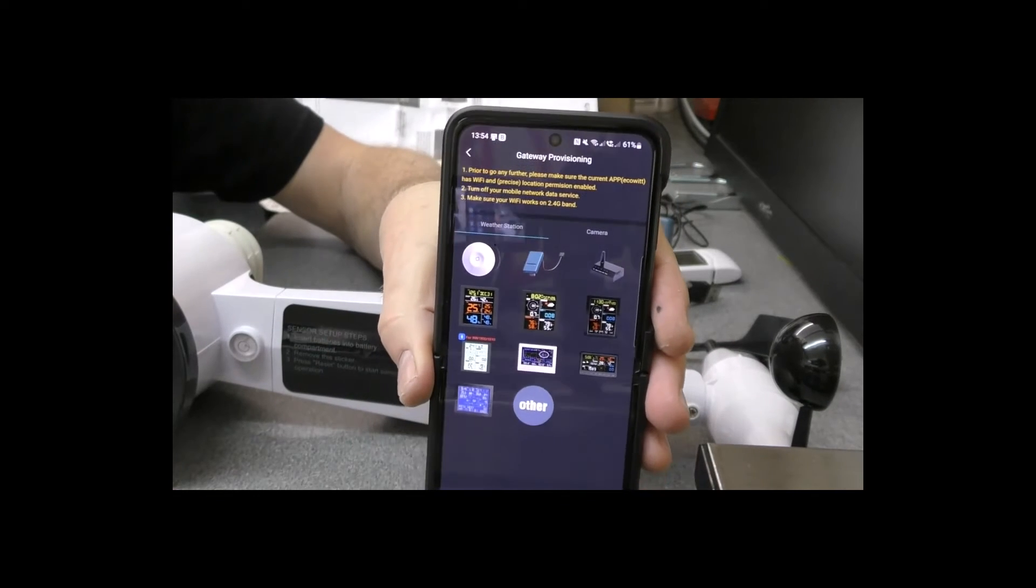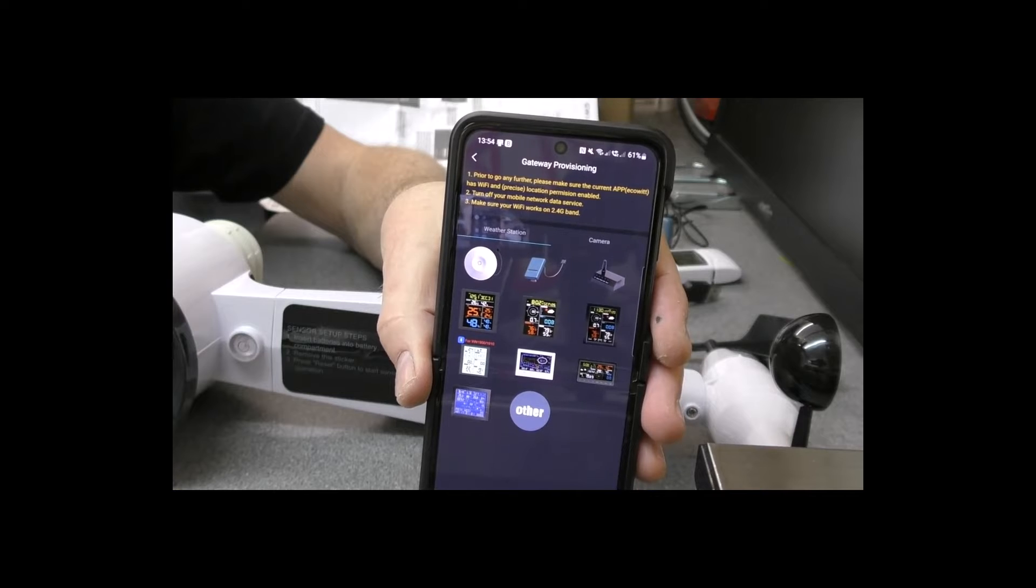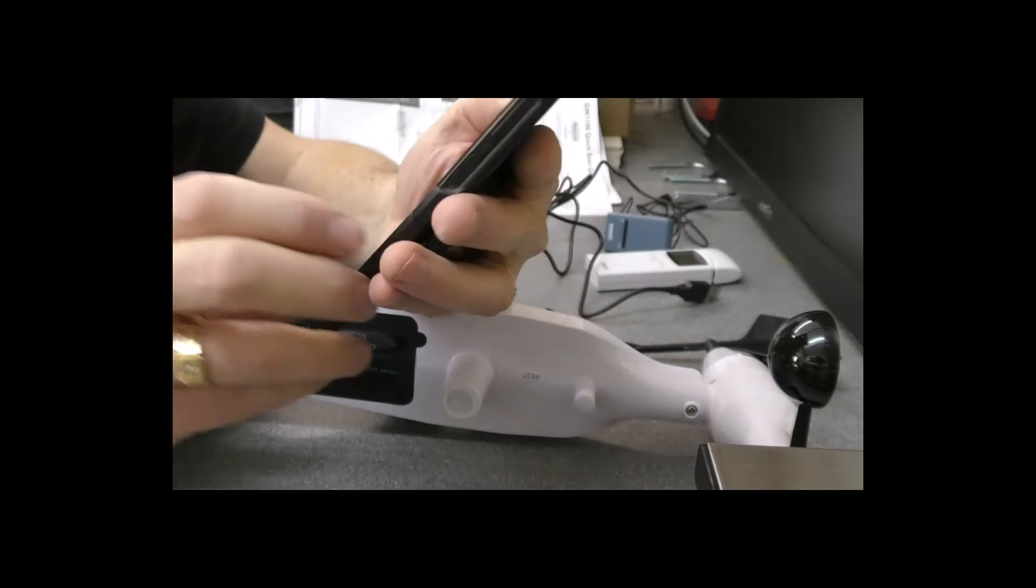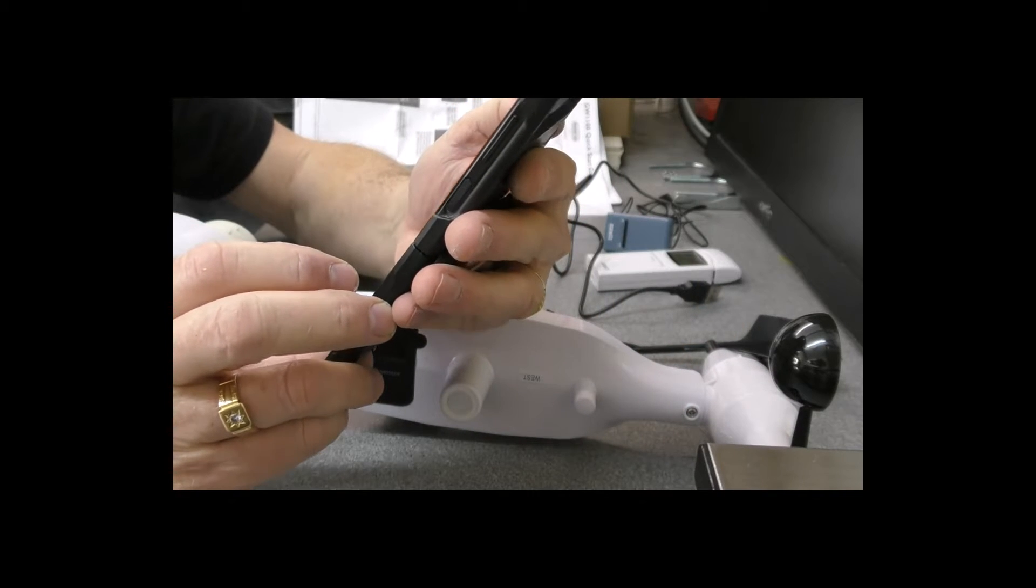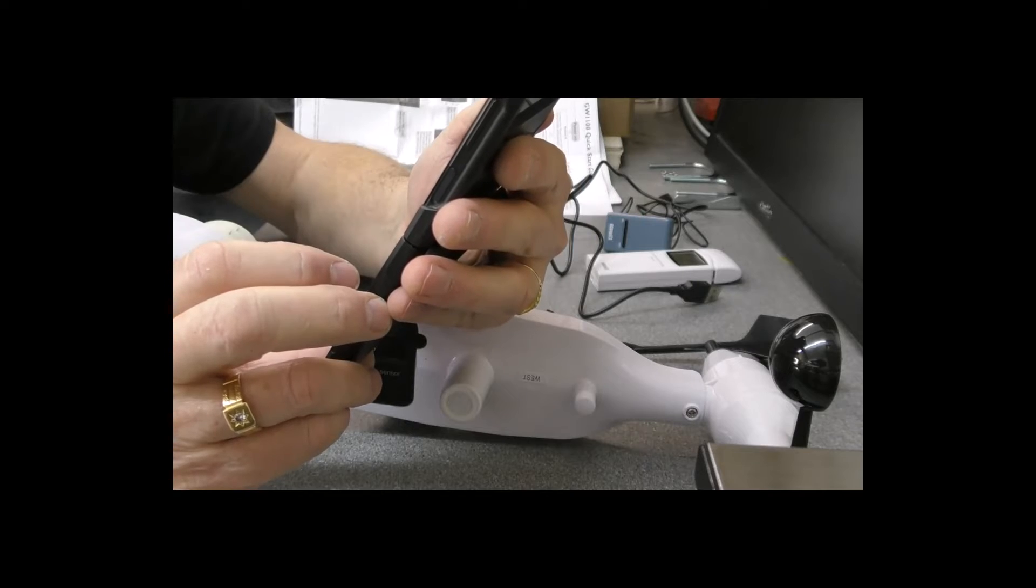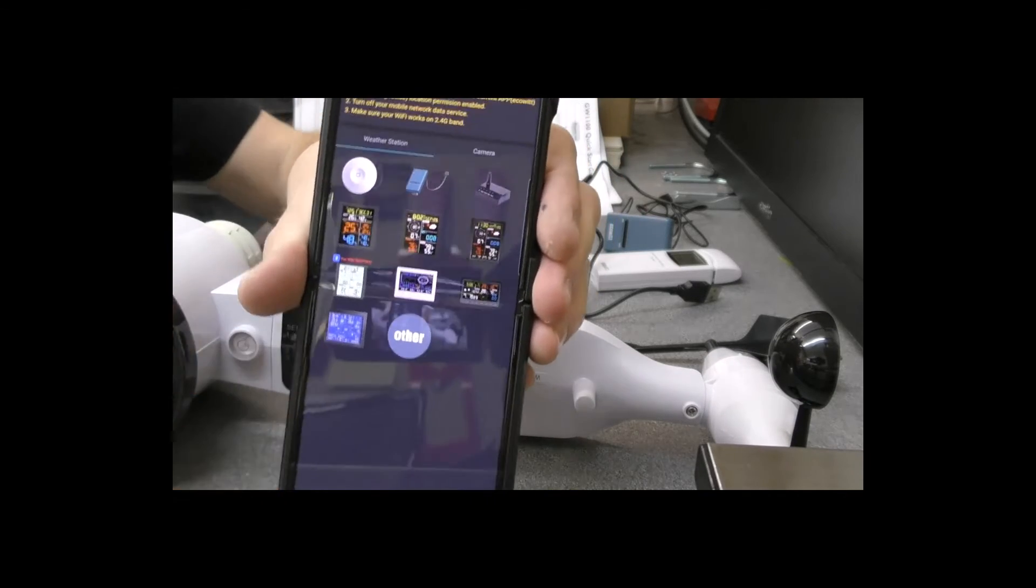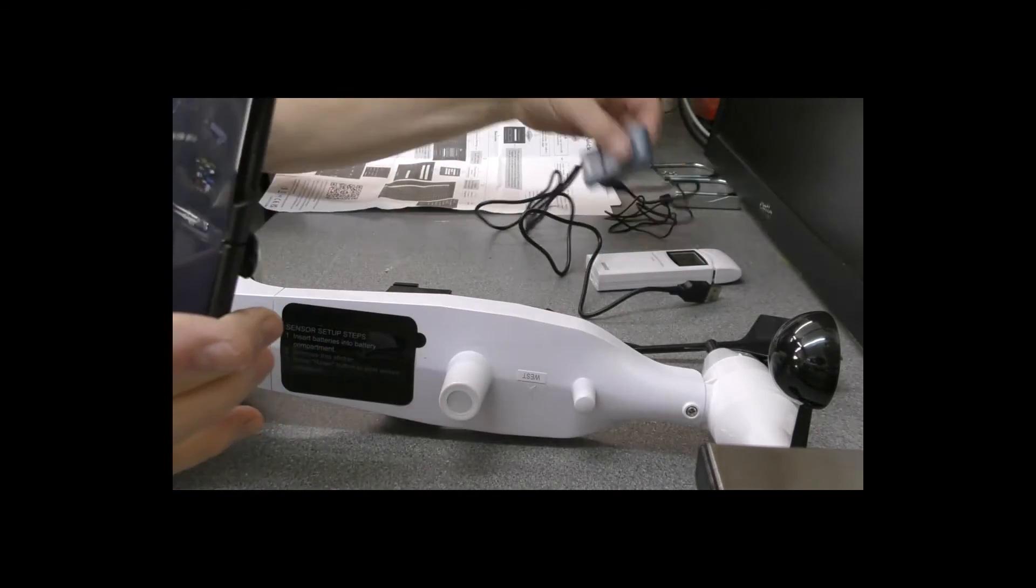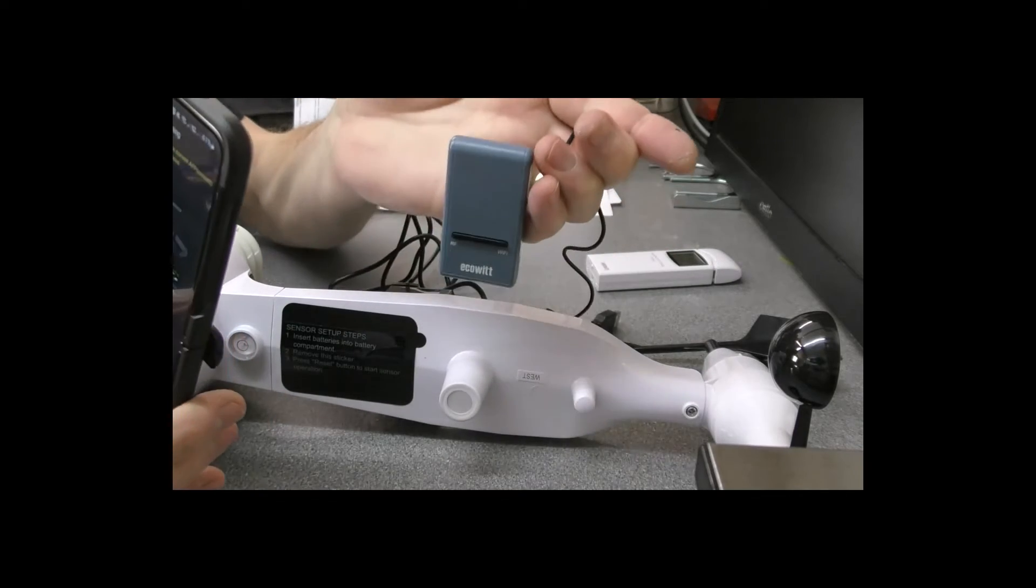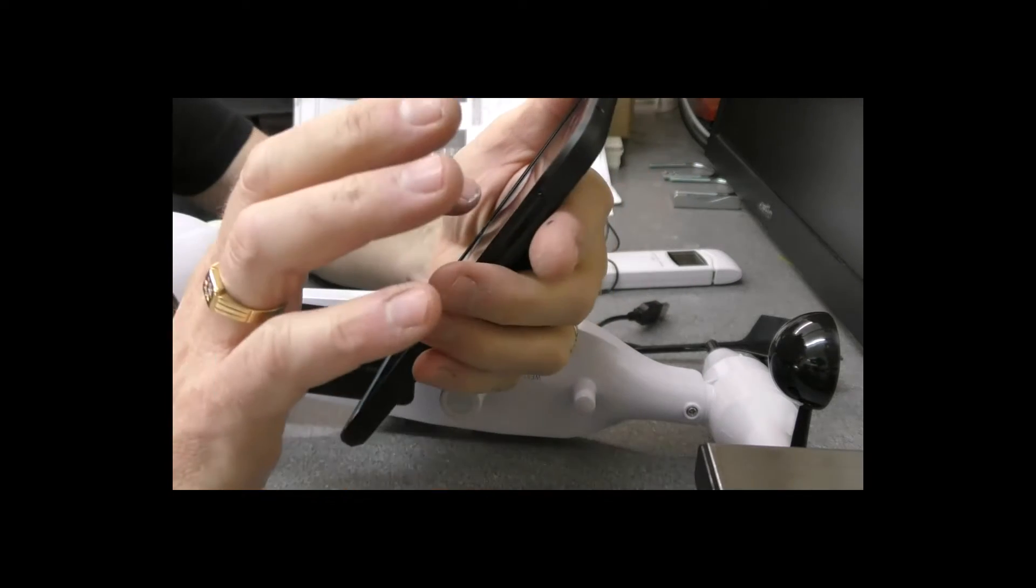Everything is turned off now cellular-wise, and we're going to check which device we have. What we've got is the second one, which is this little Ecowit hub, so we're going to tap on that.